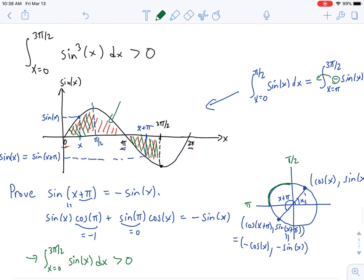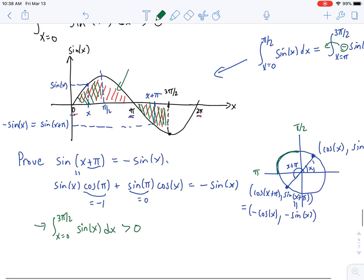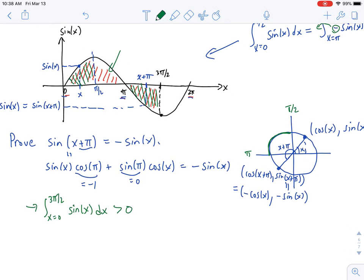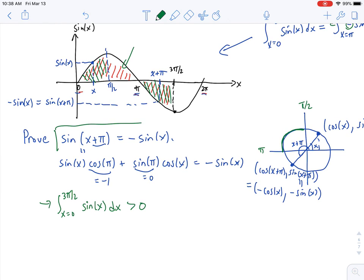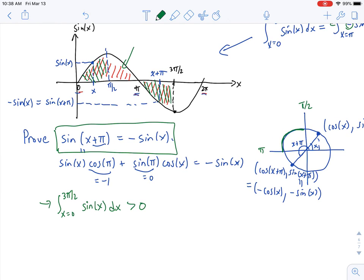Okay, well, what happens with the problem we actually wanted, which had a sine cubed in it? Well, we actually can just go to this formula we proved, and we can cube both sides. So if I take sine of x plus π and cube it, that will be the same thing as negative sine of x cubed. And so sine cubed of x plus π is equal to, well, if you cube a negative, that's still a negative, and then you get negative sine cubed.